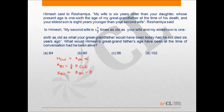Then Rashmiya said to Himesh: my second wife is 8/7 times as old as your wife. That means Rw, wife of Rashmiya, is 8/7 of wife of Himesh.